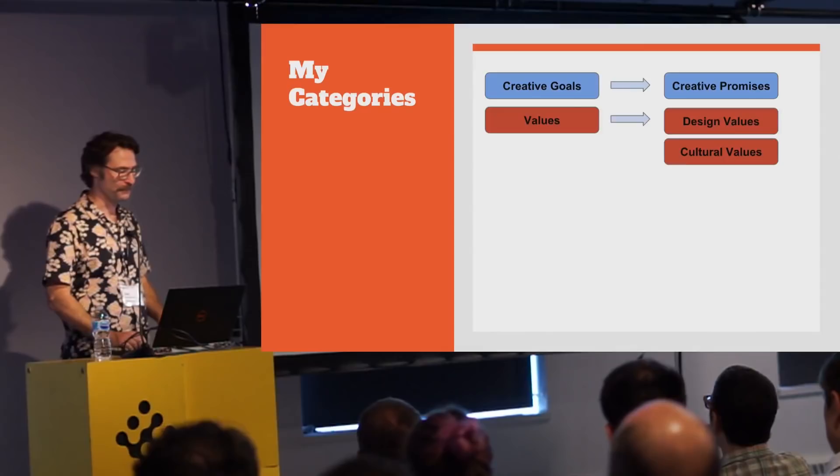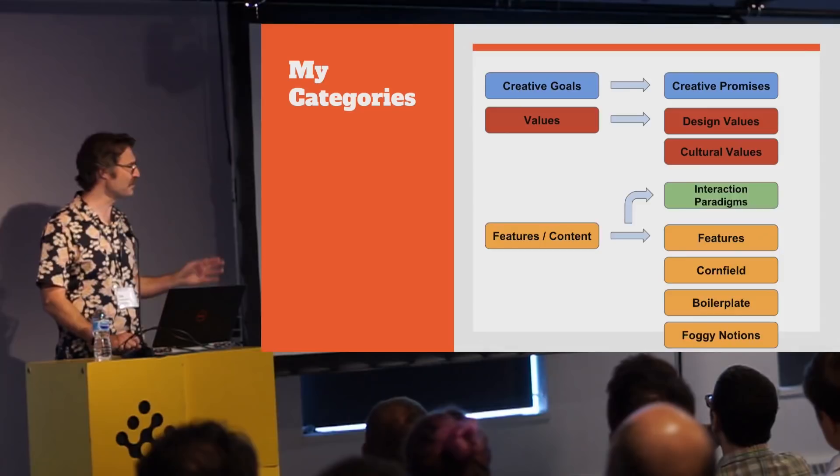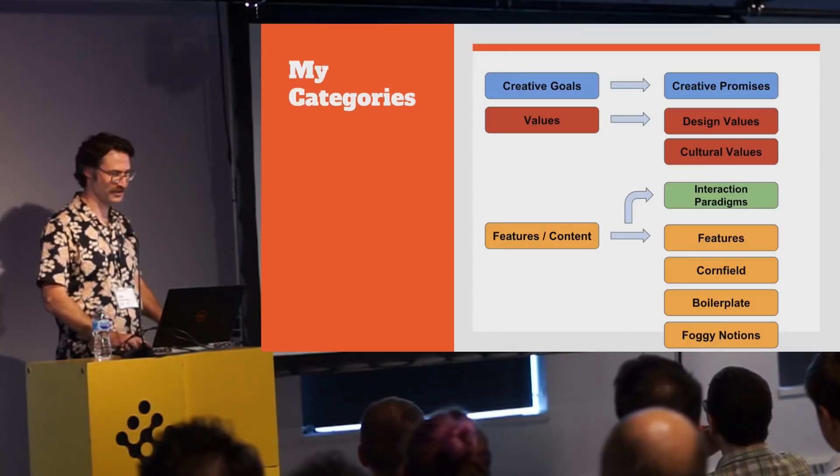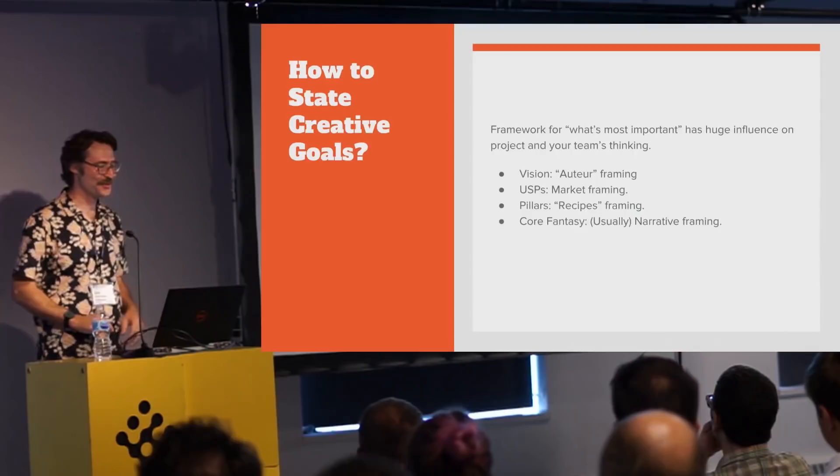For high-level goals I use something called creative promises. For values, I break those down into design values and cultural values. Features get broken down into a whole bunch of subcategories including interaction paradigms — which are like super features — a whole bunch of feature subcategories for feature prioritization, and some novelty categories that end up being very important.